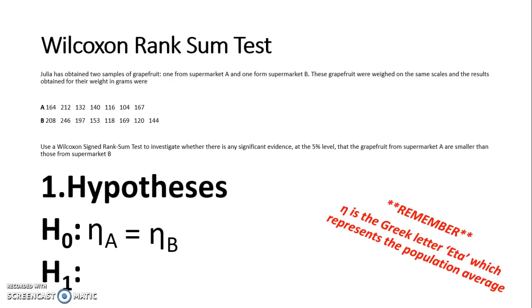To work out the alternative hypothesis, I need to decide if we are not equal to, greater than or less than. And I can work that out from the question. So just reading through what they're asking me to do, they're asking me if the grapefruit from A is smaller than B. So I'm going to do eta A less than eta B.